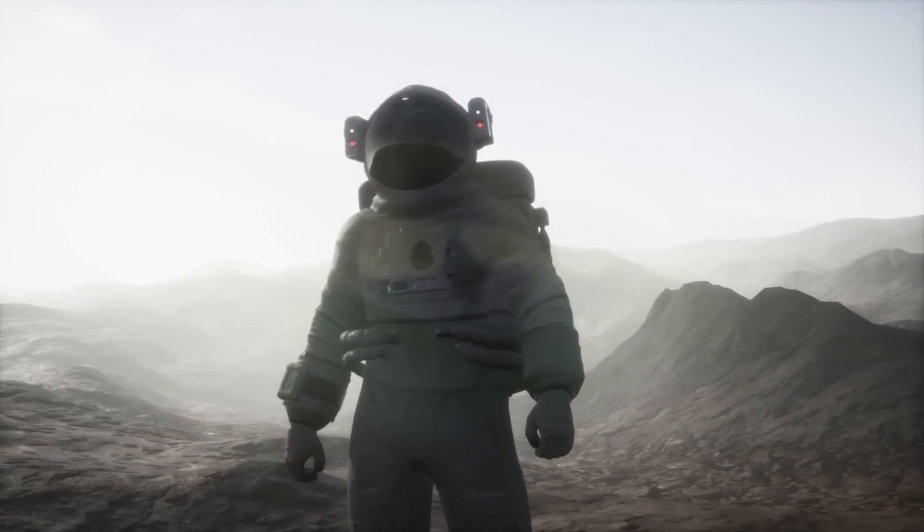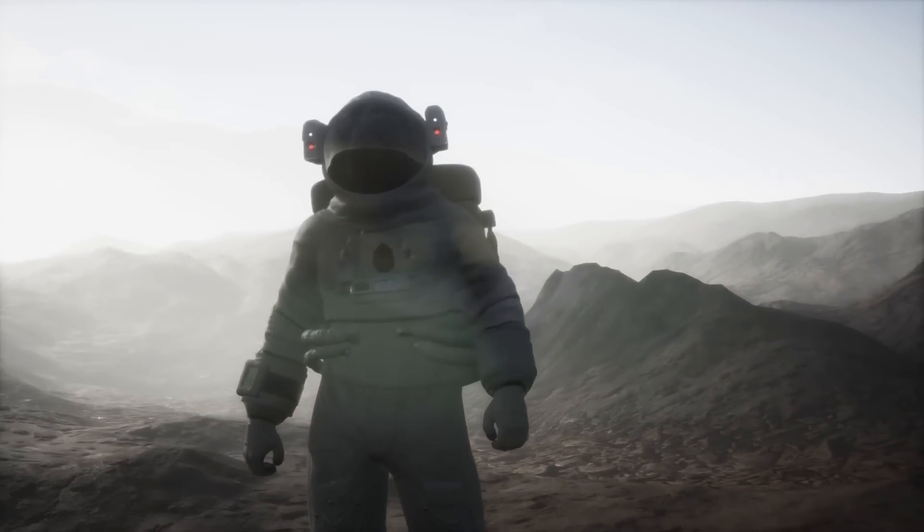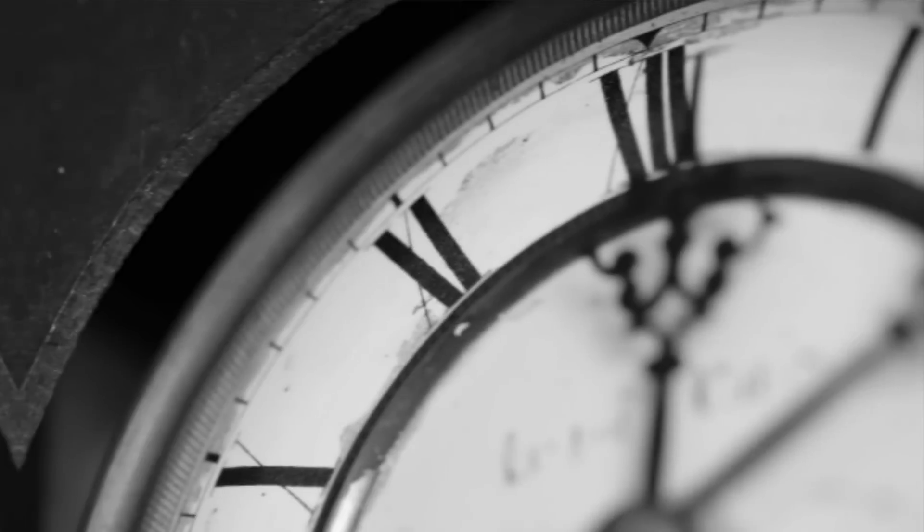Only a few hours pass for the astronauts who come down to the planet, while for their colleague Romilly who remains aboard the spaceship, 23 years pass. But why does this happen?